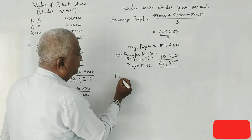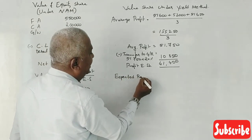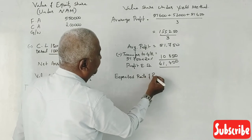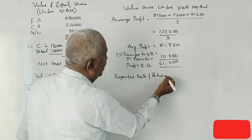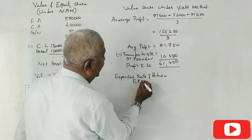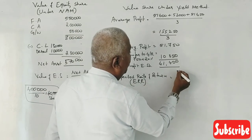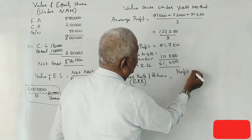Now, expected rate of return. What is ERR? Profit for equity divided by equity share capital.